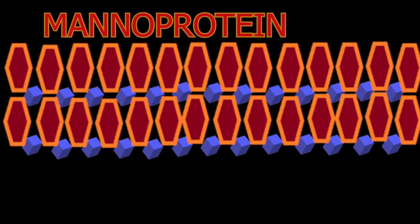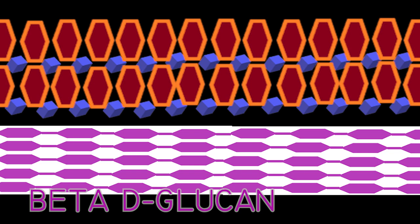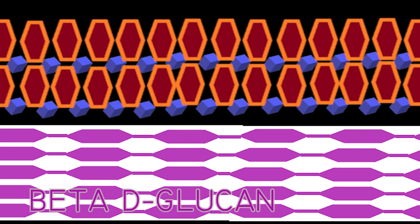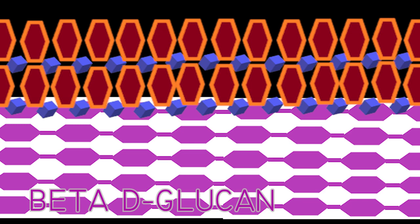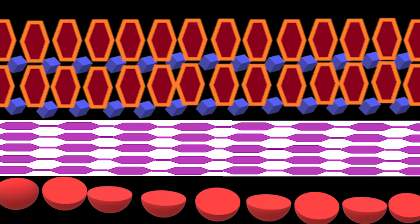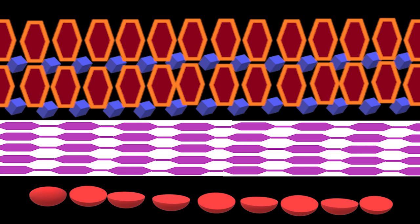An important minor component is chitin, which contributes to the insolubility of the fibers. Manoproteins are non-filamentous glycoproteins localized to the outermost layer of the yeast cell wall. Beta-glucans comprise a group of beta-D-glucose polysaccharides naturally occurring in the cell walls of cereals, bacteria, and fungi, with significantly differing physicochemical properties depending on the source. Glucans are arranged in six-sided D-glucose rings connected linearly at varying positions. Chitin is a modified polysaccharide that contains nitrogen, synthesized from units of N-acetyl-D-glucosamine, and is the second most abundant polysaccharide in nature after cellulose.